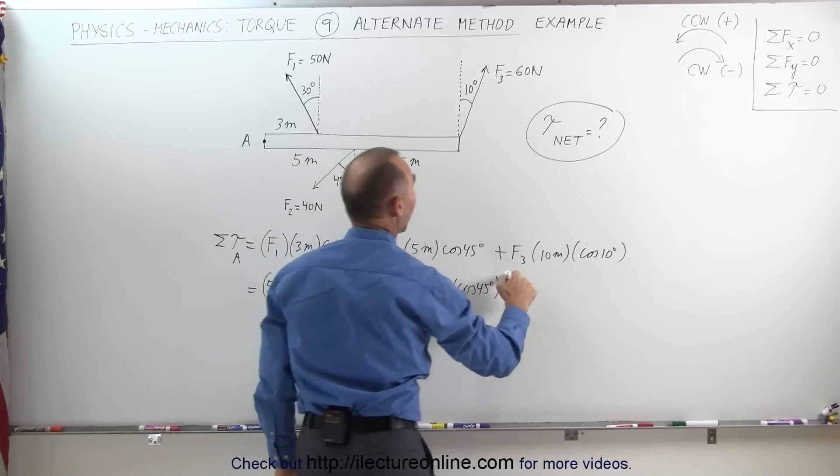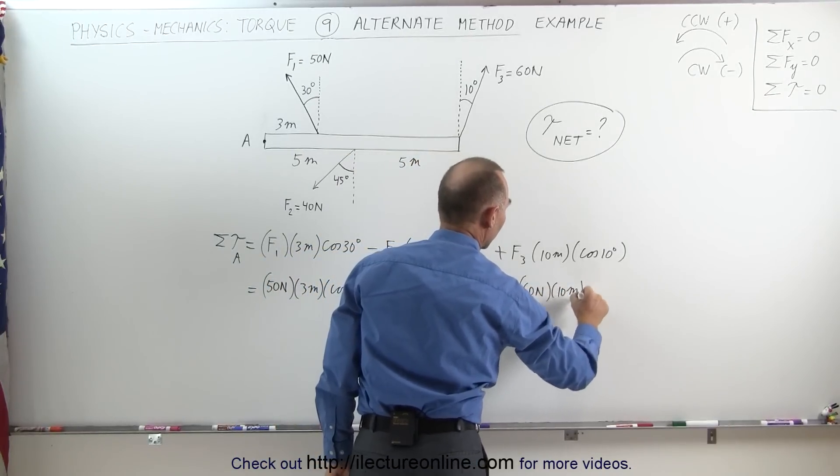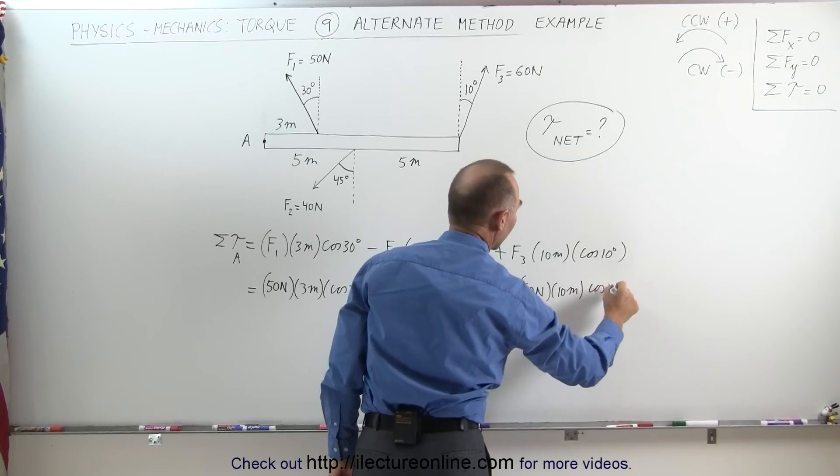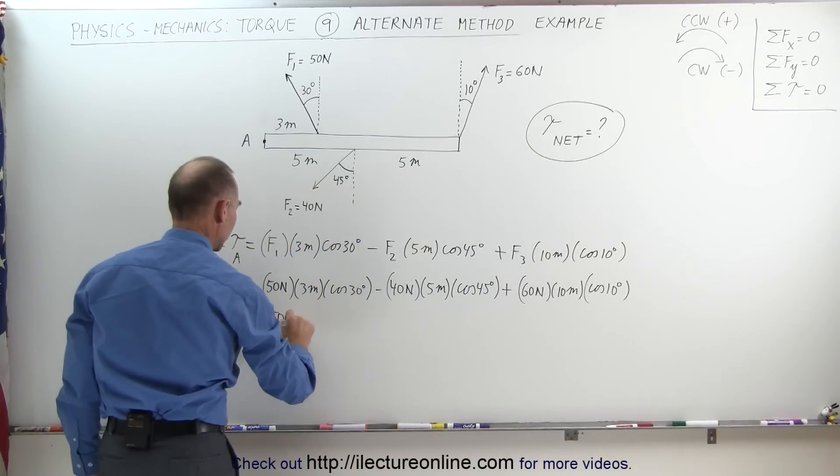And plus F3, which would be 60 newtons, times the distance of 10 meters, times the cosine of 10 degrees. Simplifying this a little bit, this would be 150 newton-meters times the cosine of 30 degrees.